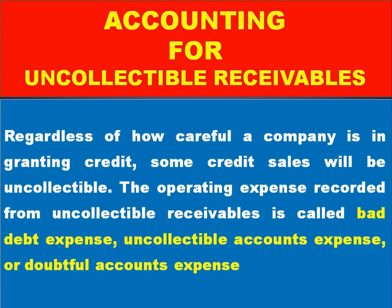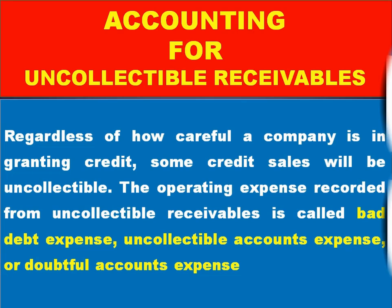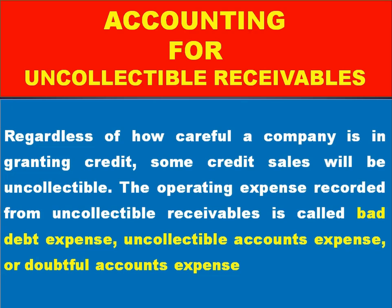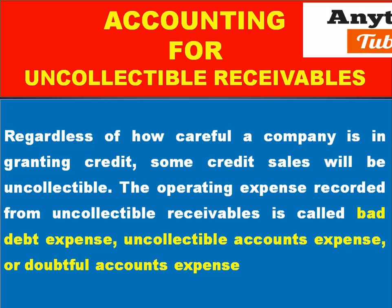Regardless of how careful a company is in granting credit, some accounts will become uncollectable. These are recorded as operating expenses. The expense may be called bad debt expense, uncollectible accounts expense, or doubtful accounts expense.